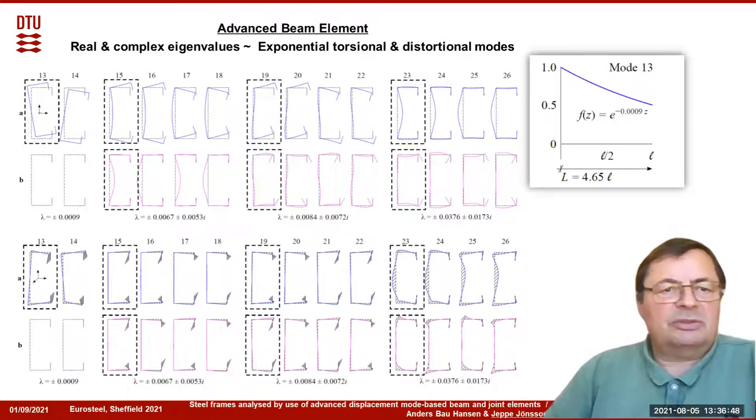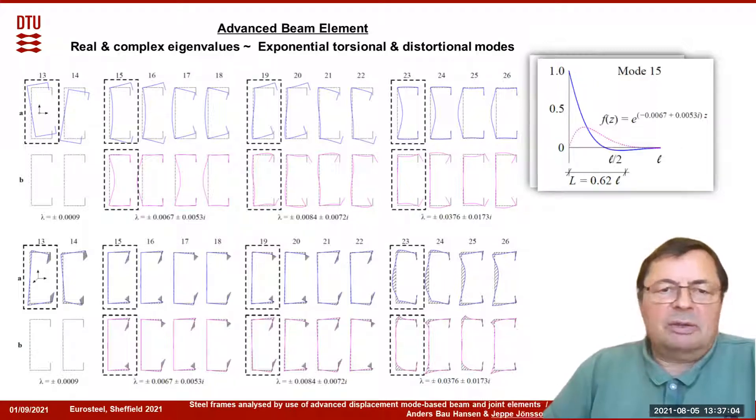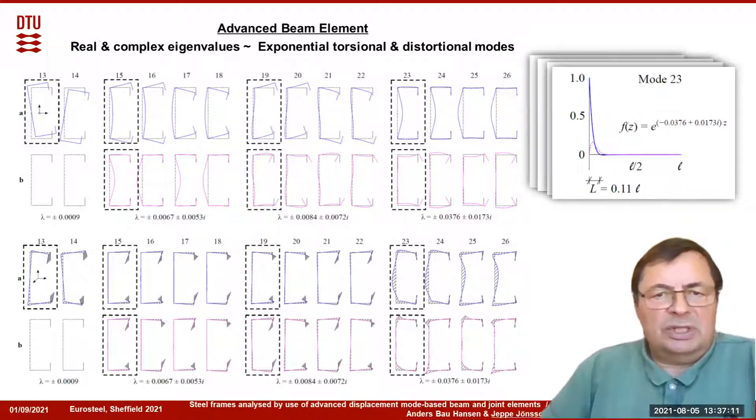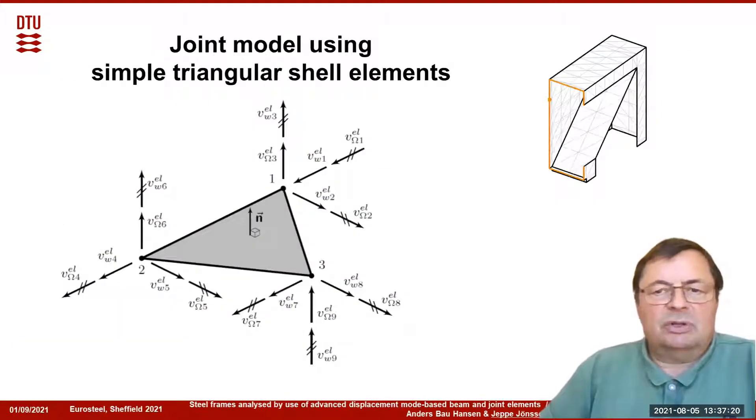Each mode varies exponentially. Mode 13, like this, and we can see this is the torsional or warping part, which has an exponential variation, or hyperbolic variation, along the length. Then we have the following warping modes which die off, and the higher the mode number, the shorter the length scale we get. Mode 23 is only about 10 to 11 percent from the end, which is affected by end disturbances.